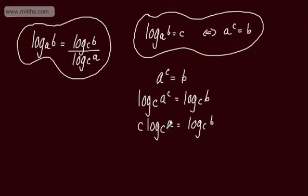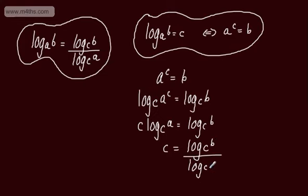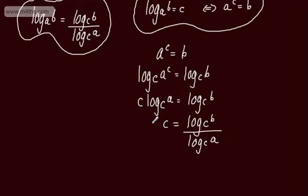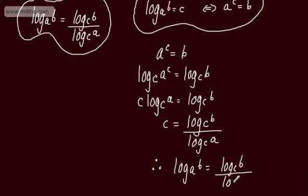At this stage, using the power law, we apply it to the left side and then divide through by log to the base C of A. That gives us C is equal to log to the base C of B divided by log to the base C of A. We know that C equals log to the base A of B, so we can write log to the base A of B is equal to log to the base C of B divided by log to the base C of A — and that gives us the change of base formula.